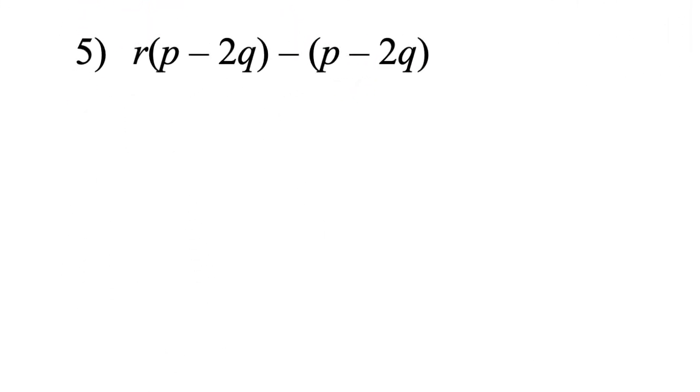And for this one, this time it is the binomial. So very straightforward. Take out P minus 2Q first. And then this is R minus 1. Because actually there is a hidden one here. So when you take away this term, then the remaining term will be 1.